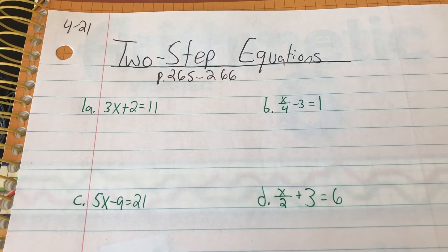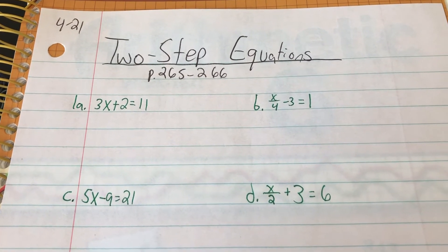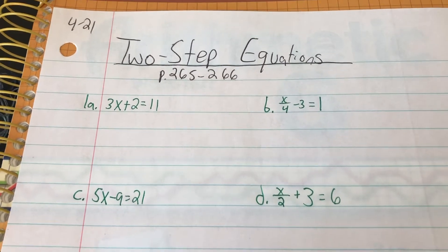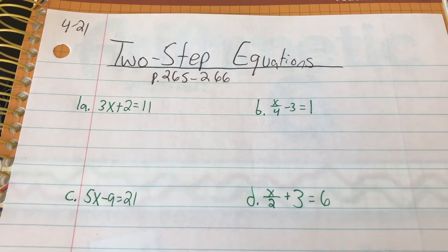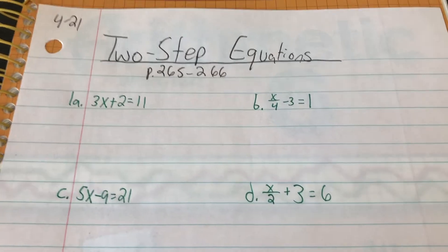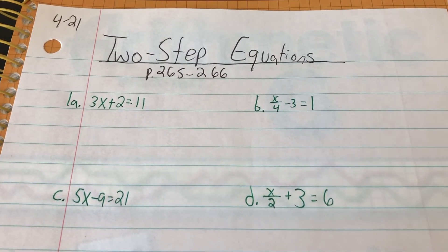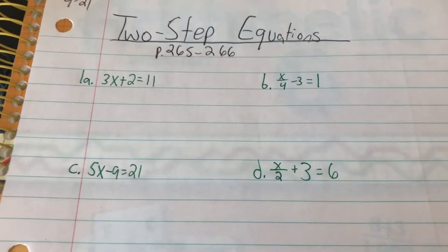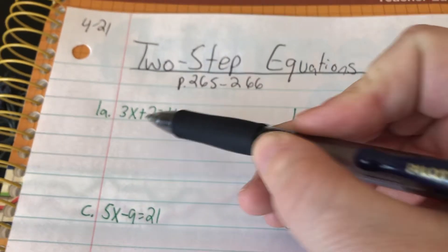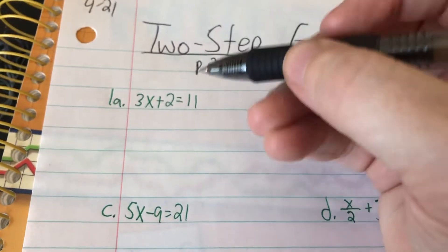Hey sixth grade, I hope all is well. Today in math we're going to be talking about two-step equations. This is going to cover page 265 and 266 in your textbook. To solve these two-step equations we're doing the same kind of thing that we do with other equations — we have to try to get our variable by itself. There's just more math involved in it.